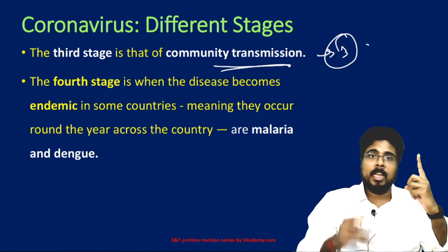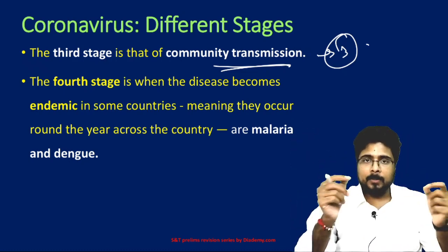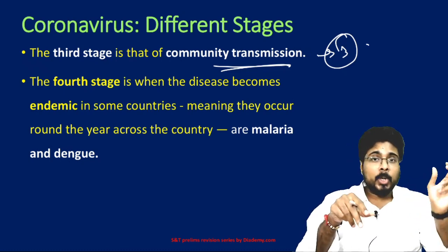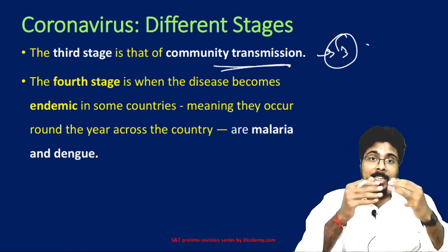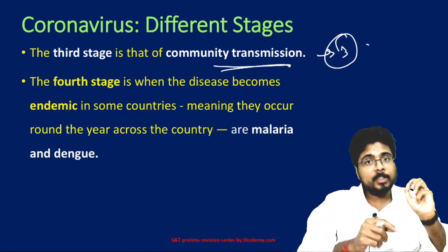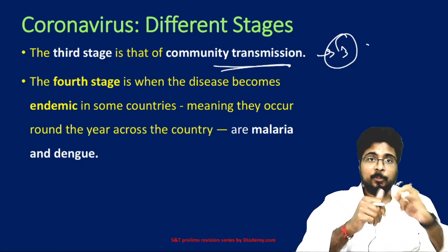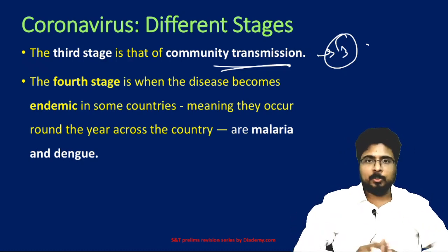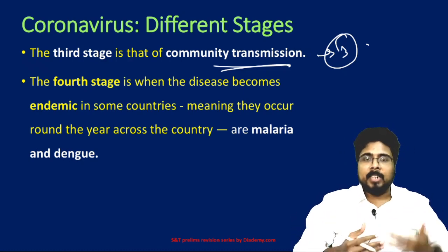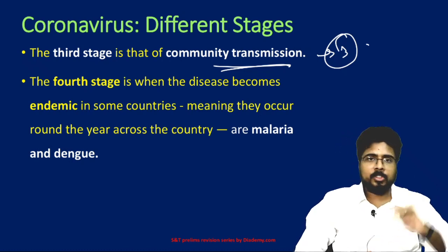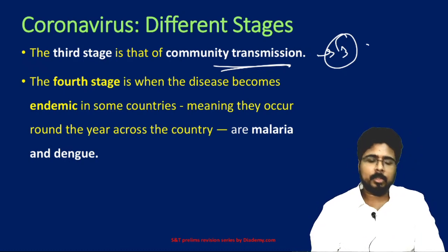To summarize the four stages: Stage 1 — an endemic in one country becomes a pandemic. Stage 2 — the pandemic spreads locally and we can identify the source. Stage 3 — community transmission, where we are not able to identify the source. Stage 4 — the disease has become endemic even in the other countries where it spread, occurring timely and repeatedly in those countries.